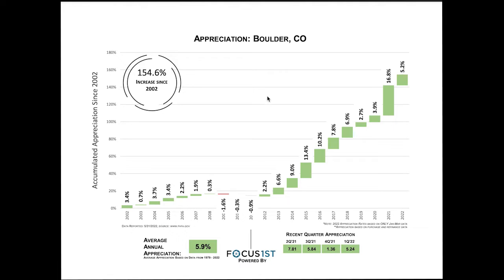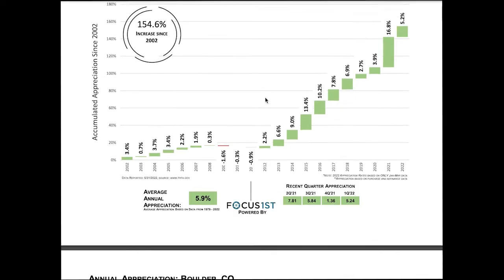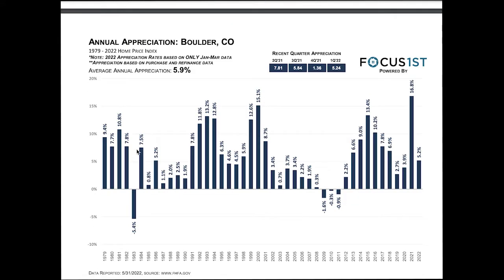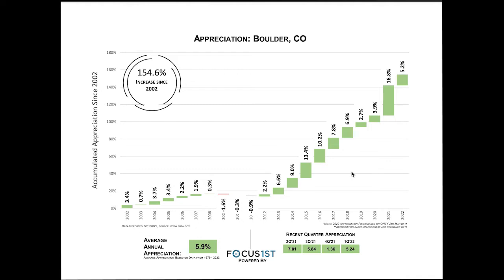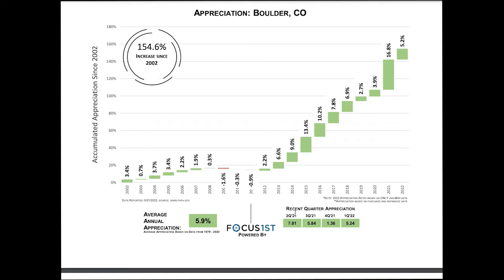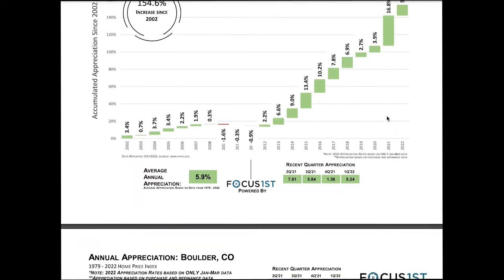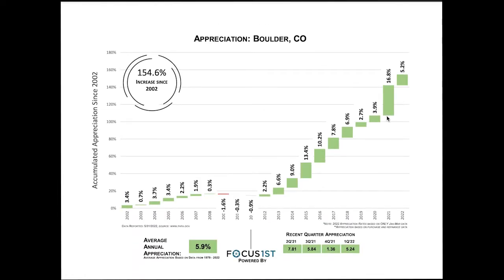For the meat and potatoes, here's where I go over the different parts of appreciation and what's going on in the market. Here's our Boulder appreciation graph from Focus First — this version goes all the way back to 1979. If they bought their house in 2014, for example, I'll write in the purchase price and hand-calculate the appreciation based on the annual rates — 13.4%, then 10.2% — showing appreciation jumps each year. I tell them we use three different methods to compare values, then look at threats and competition to determine the correct pricing strategy, because pricing strategy is a huge part of marketing.